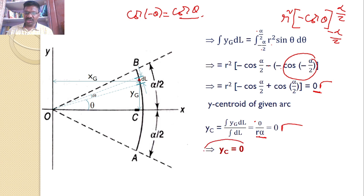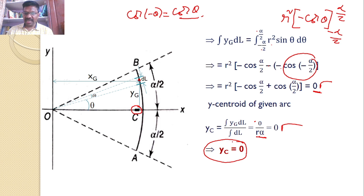Hence, YC = 0. This means the Y coordinate of the centroid of circular arc AB lies on the X axis, which makes sense because the arc is symmetric about the X axis. This result is also confirmed from basic fundamentals.